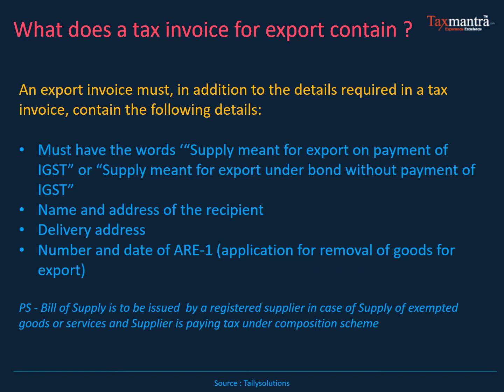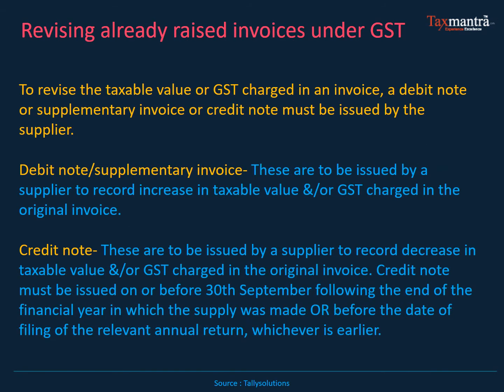How do we revise invoices already raised under GST? To revise the taxable value or GST charge in an invoice, a debit note, supplementary invoice, or credit note must be issued by the supplier. When you need to increase the taxable value or GST charge, a debit note or supplementary invoice is required. When you need to reduce the taxable value or GST charge, a credit note must be issued. The credit note must be issued before 30th September following the end of the financial year in which the supply was made.